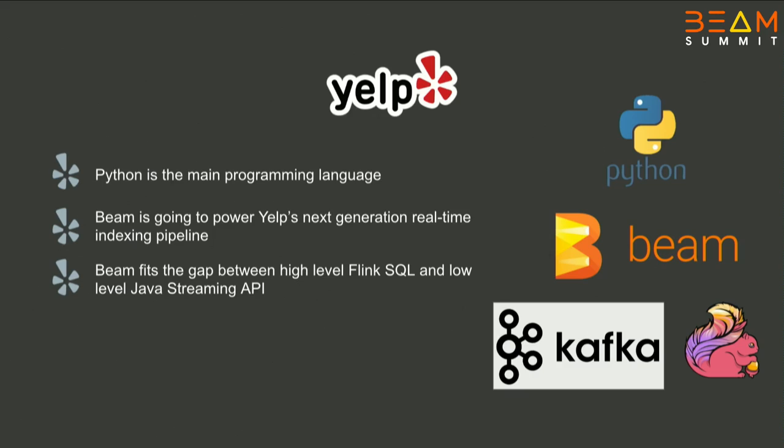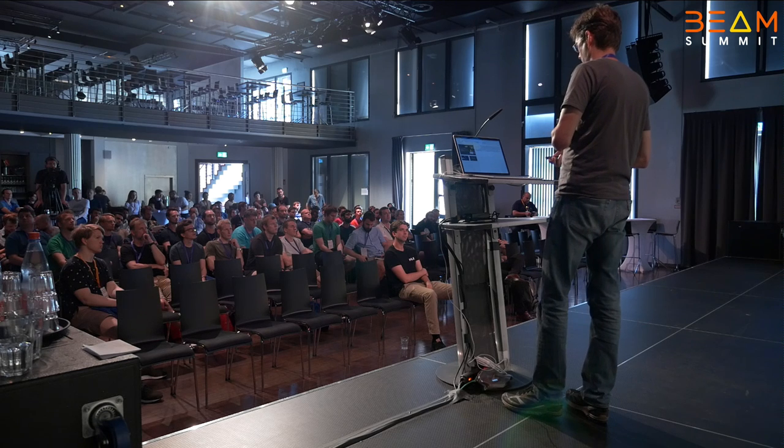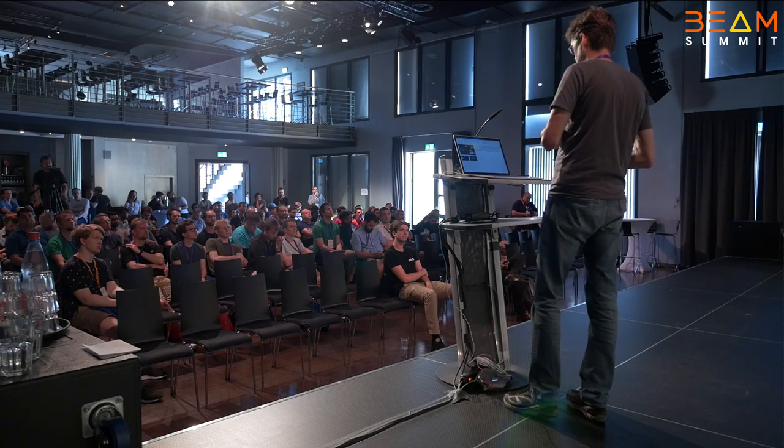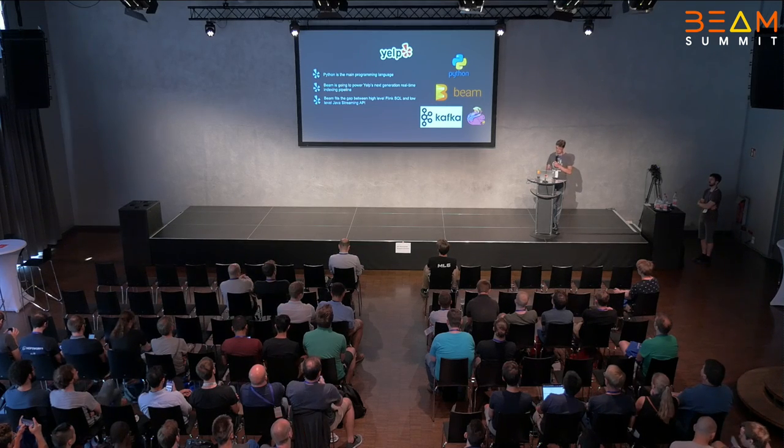The final example is from Yelp. Yelp is also working on making Python work on Flink — a similar situation to Lyft. They have a lot of existing code written in Python and they want to make it run in streaming on Flink. This large amount of business logic already implemented is critical to reuse for streaming. The streaming infrastructure at Yelp relies on Kafka for message storage and transport and Flink for real-time processing. The Beam Python SDK is the way to adopt Flink for Python users.